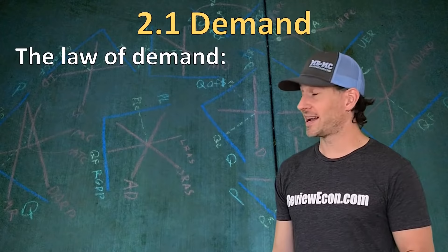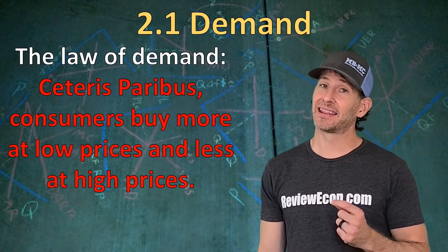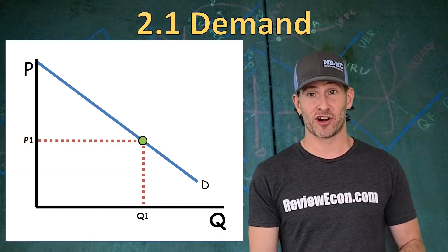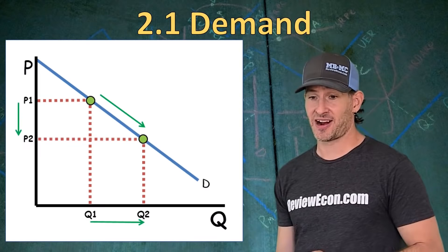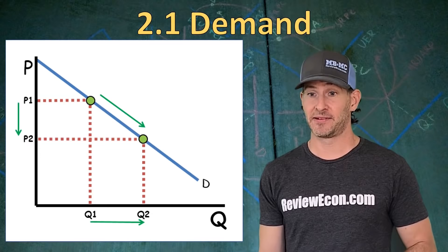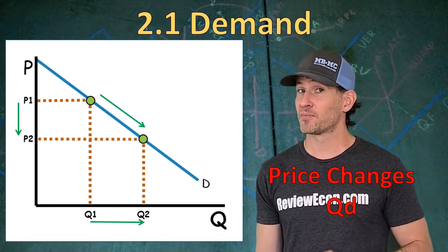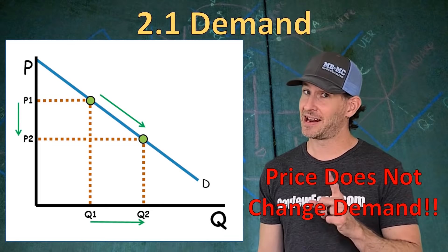We're going to start off by talking about the law of demand. The law of demand tells us that ceteris paribus, consumers buy more of a good at low prices and less of a good at higher prices. That means we have a downward sloping demand curve because there's an inverse relationship between price and quantity demanded. When price rises, that causes movement along the curve. A decrease in price causes movement down that curve and increases quantity demanded. Price changes quantity demanded — price does not change demand.